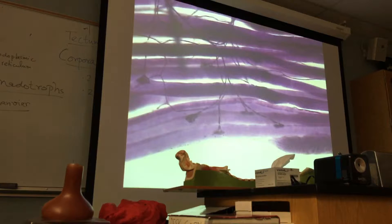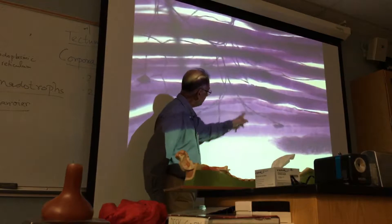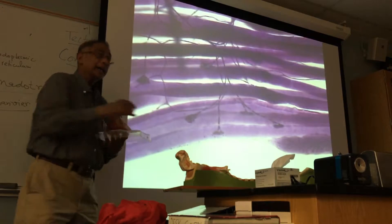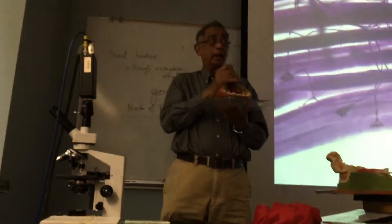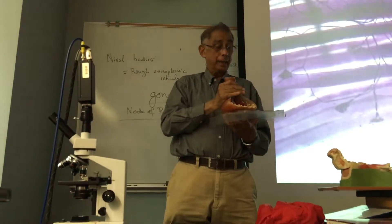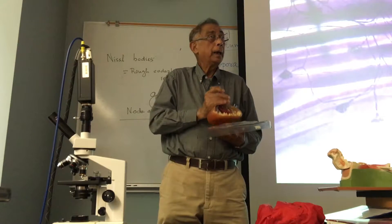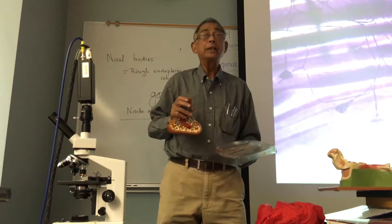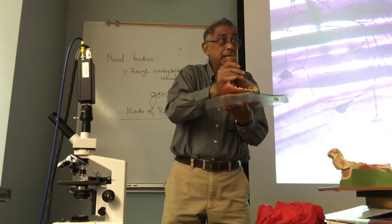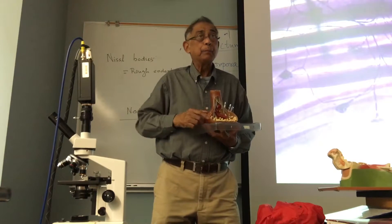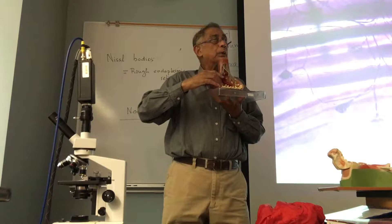Can you see the node of Ranvier? Can you see this gap? These gaps here — this is the synaptic end bulb. This is a chemical synapse. This belongs to a neuron, so this is the pre-synaptic neuron, and this is the post-synaptic neuron. Do they physically touch? No — there is a gap. What is that gap called? The synaptic cleft.